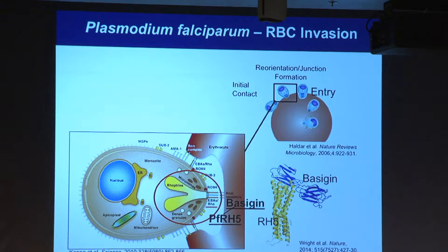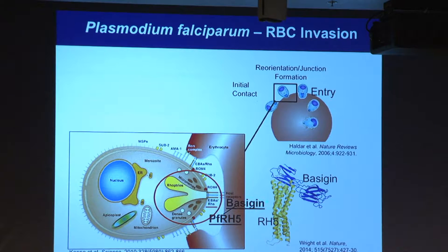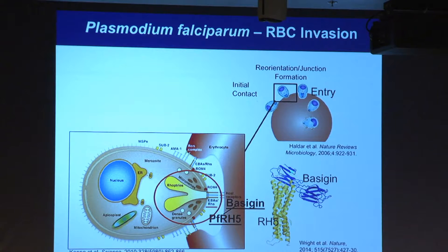To give one example: when parasites infect red blood cells, the parasite uses a receptor called RH5, which recognizes a protein expressed on RBCs called basogen. This entry mechanism is required for the parasite to get into the RBC. In collaboration with Peter Pryzo and Gaffin-Wright, they developed antibodies either against basogen or against RH5.